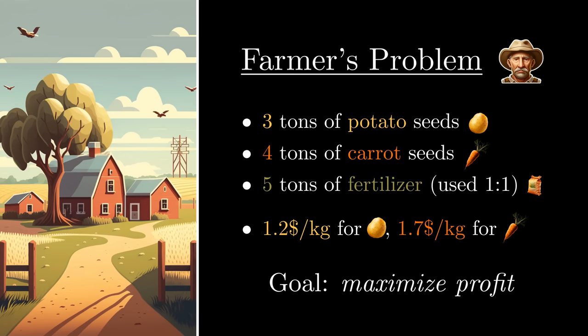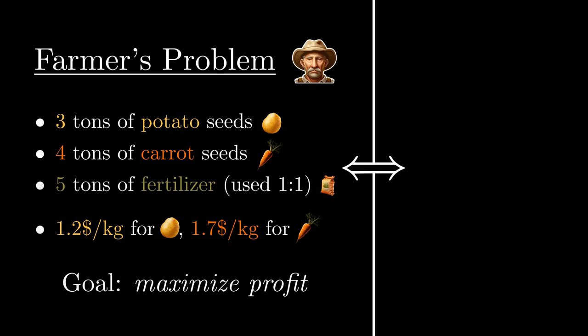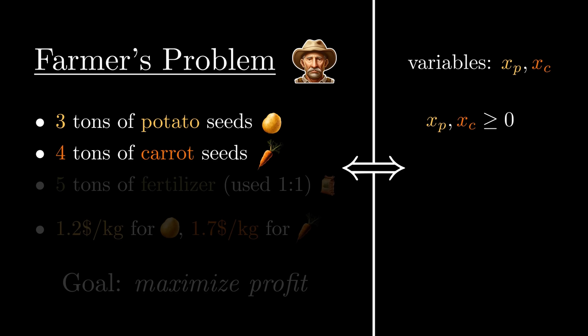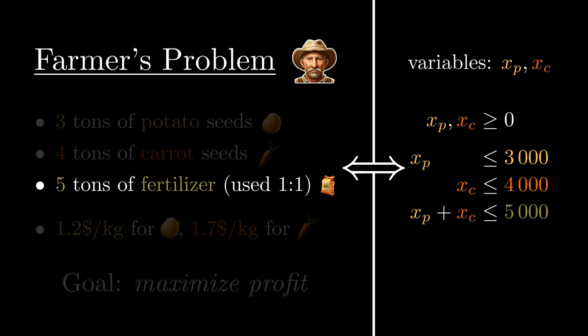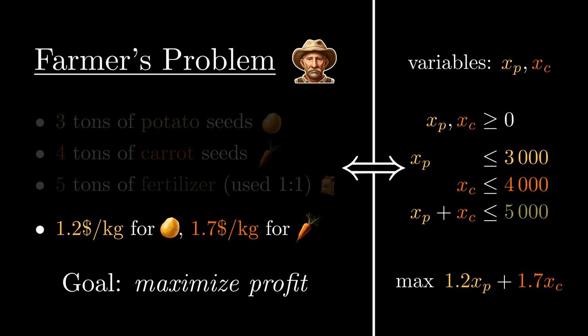To solve this problem, let's first formalize it. We'll start by creating variables xp and xc for the amount of potatoes and carrots planted. Both are non-negative real numbers, since planting a negative amount of seeds is difficult, and are bounded by the amount we have. Additionally, their sum is bounded by the amount of fertilizer we have, since it has to be used in a 1 to 1 ratio for both potatoes and carrots. The profit can then be described as 1.2xp plus 1.7xc, and we'll call it the objective function, since it's the function we're trying to maximize.